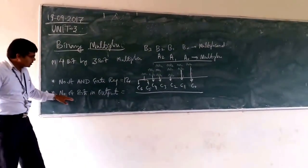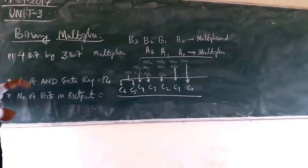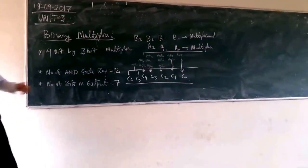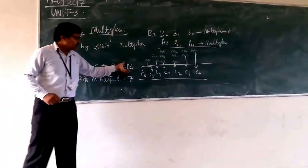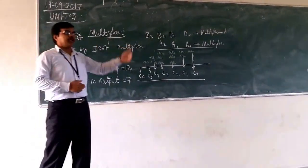And second question is what is the number of bits that you are having in the output. The number of bits that you are having in the output, it will be 7. So it will have 7 bits in the output, and number of AND gates is 12 that is required. Knowing these two concepts, now we can go for design.